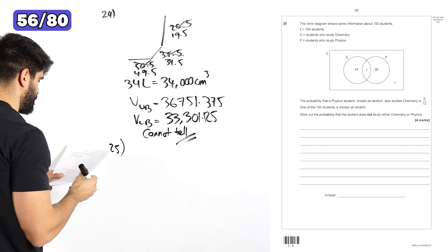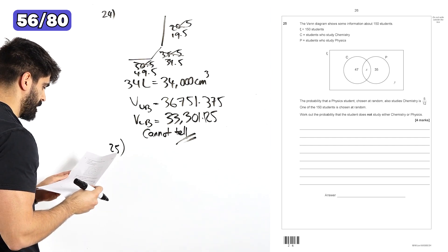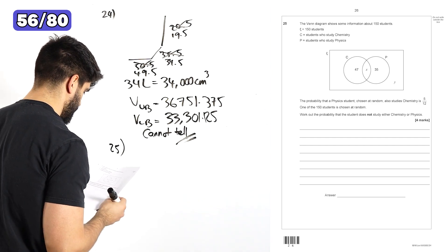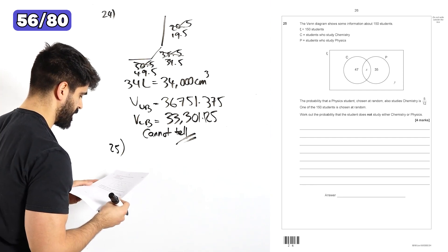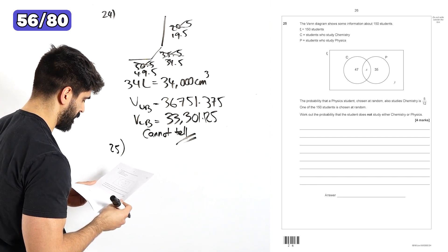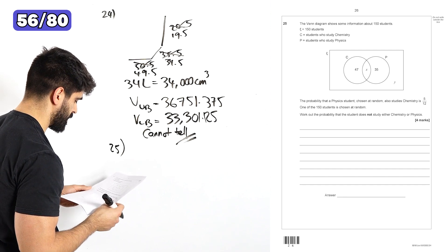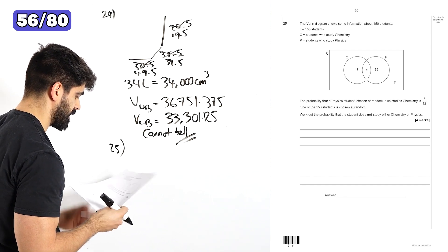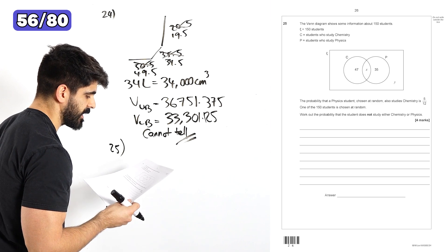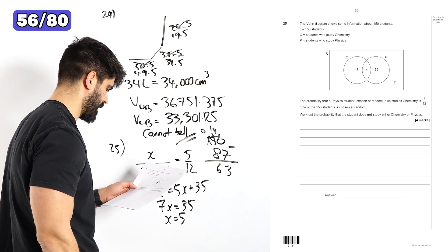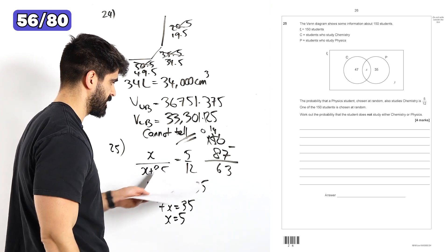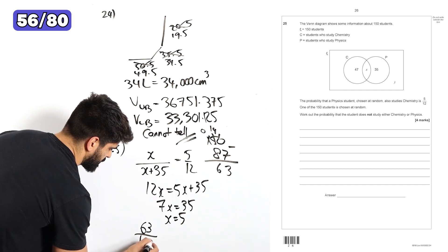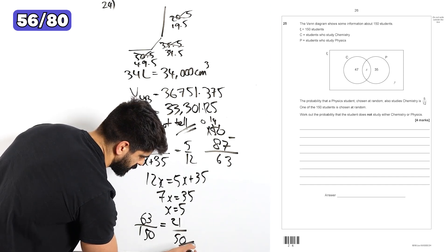Question 25. The Venn diagram shows some information about 150 students. We have chemistry, P for physics. The probability that a physics student chosen at random also studies chemistry is 5 over 12. One of the 150 students is chosen at random. Work out the probability that a student does not study either chemistry or physics. So they want us to find out why. So it's 63 out of 150. That does simplify about 42% or 0.42.